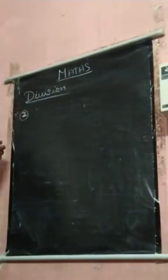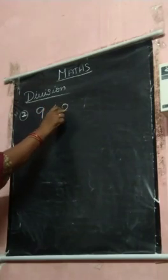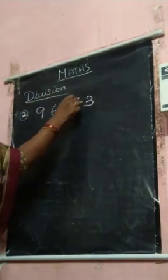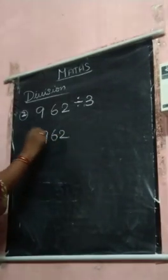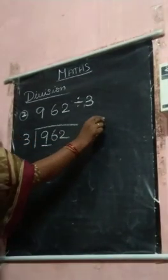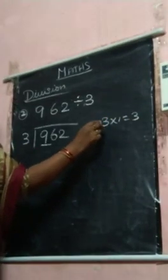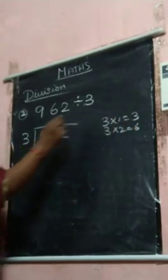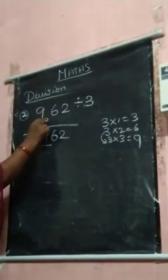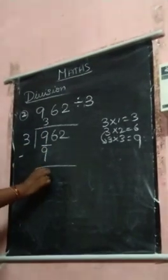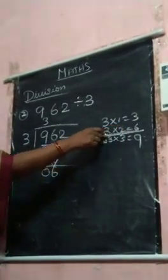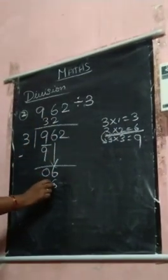Next sum, 962 divide by 3. 3 2's are 6, this is also smaller than 9, so that go down. 3 3's are 9, 9 minus 9, 0. You bring down this 6. 6 will come up. 3 2's are 6, 0.